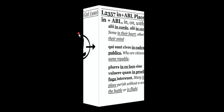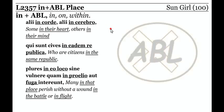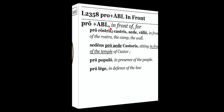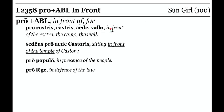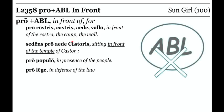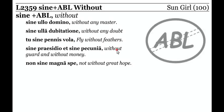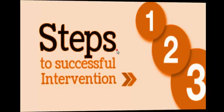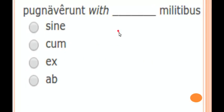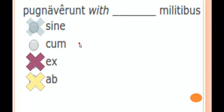We're coming close to the time limit. In plus the ablative — place phrase — in the midst of. Pro plus the ablative means in front of or on behalf of. Sine plus the ablative is the without-phrase. Now for the practice: 'They fought with the soldiers.' You have to look at what means with — and there it is. It's not ab, it's not ex, it's not...